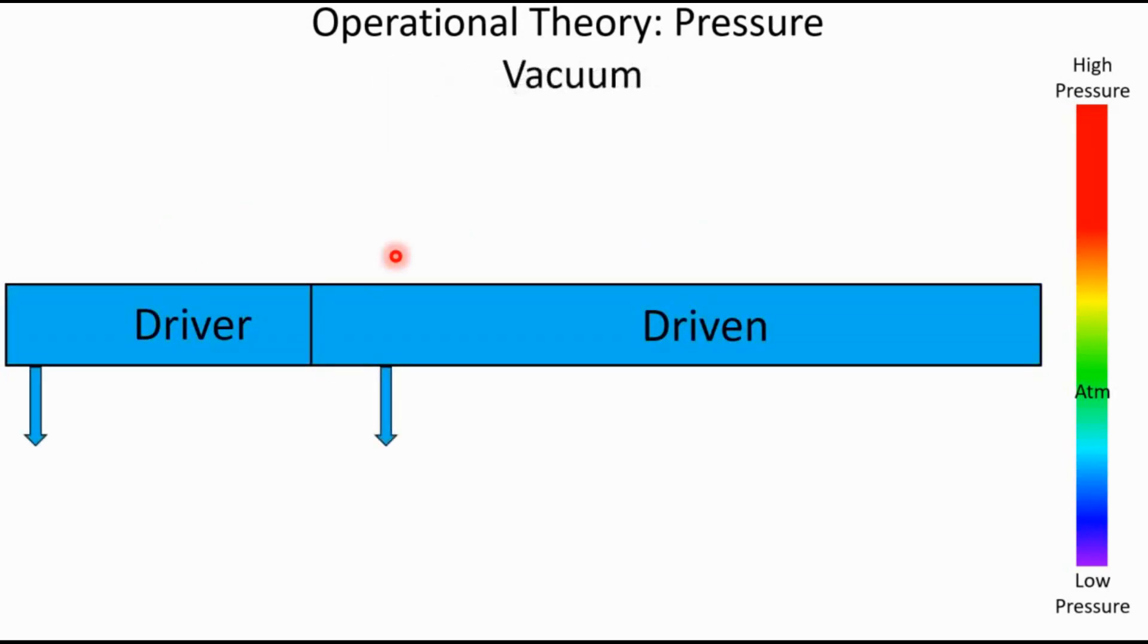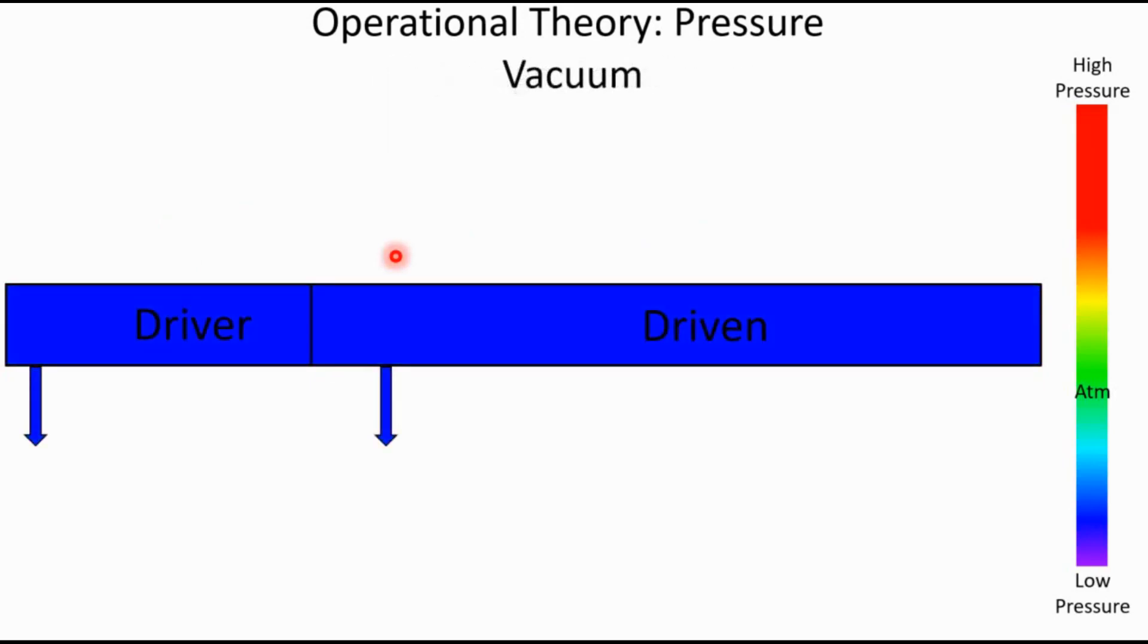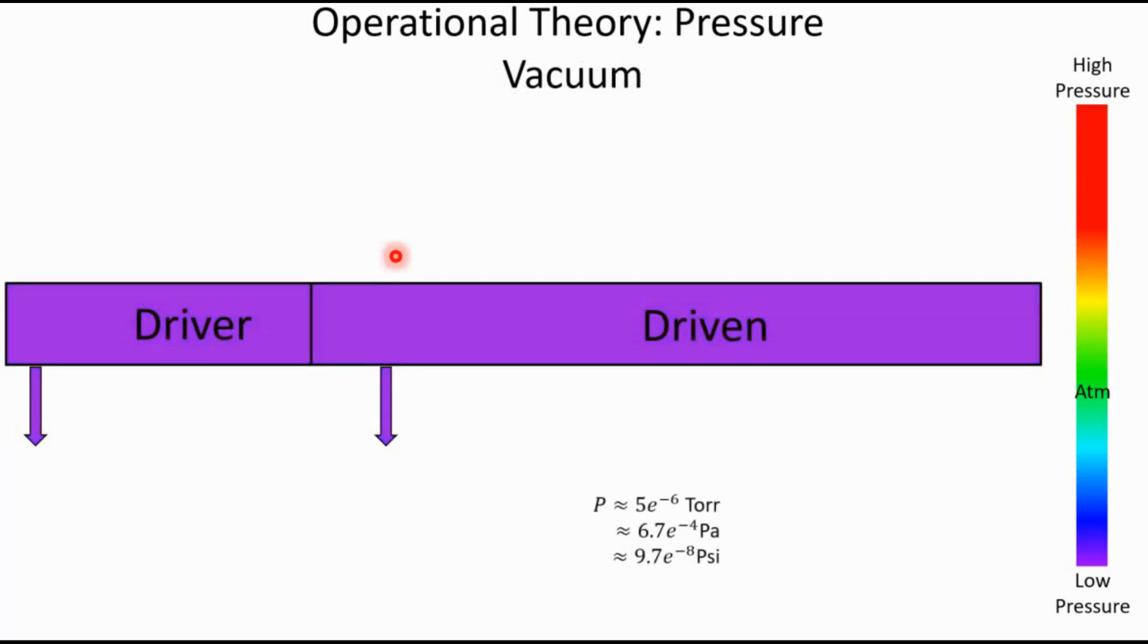Then we need to draw the driver and driven section back down to absolute vacuum. We're pulling as many molecules as we possibly can out of this. The goal is to have basically zero molecules anywhere in either one of these. And so what we're able to achieve practically is typically a vacuum pressure of about 5 times 10 to the negative 6 torr. For whatever reason, most vacuum gauges read in torr.